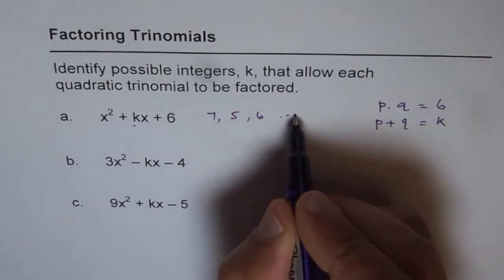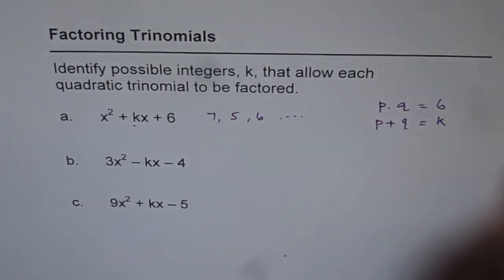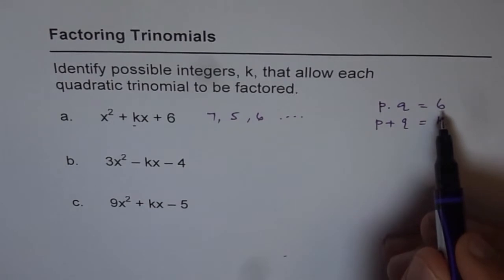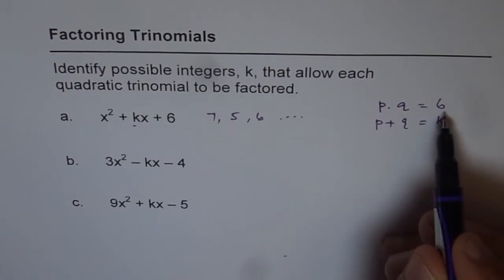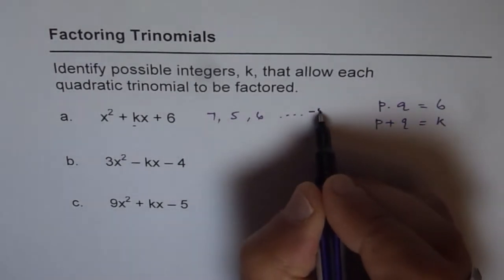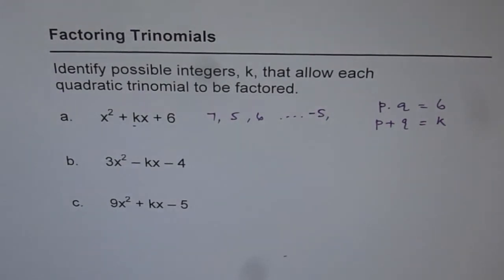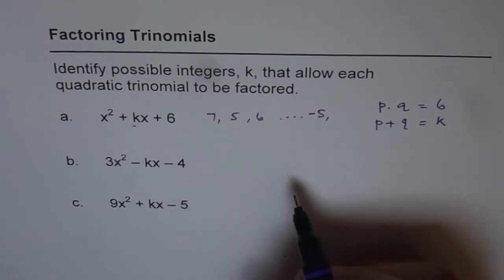So like this, you can get so many different numbers. You can even get negative numbers. Minus 2 times minus 3 is plus 6, and when you add them, you get minus 5. So you can also get negative values for k. That is how you should solve this type of question.